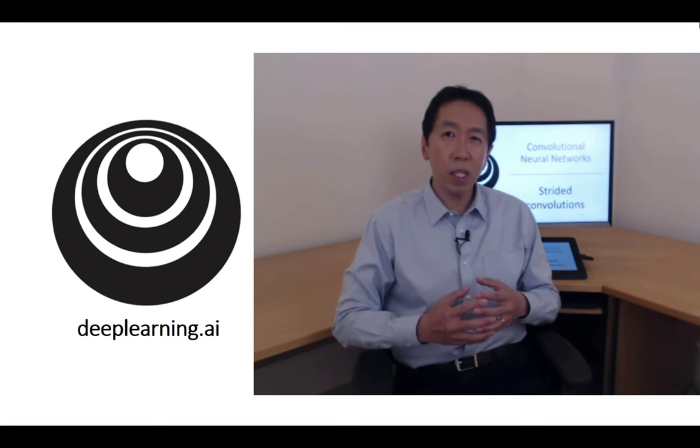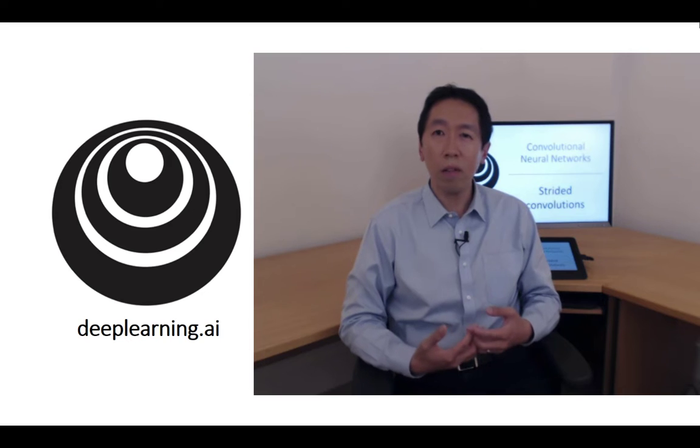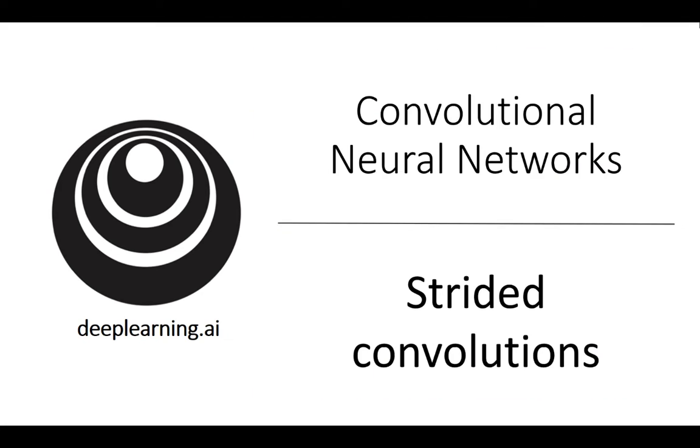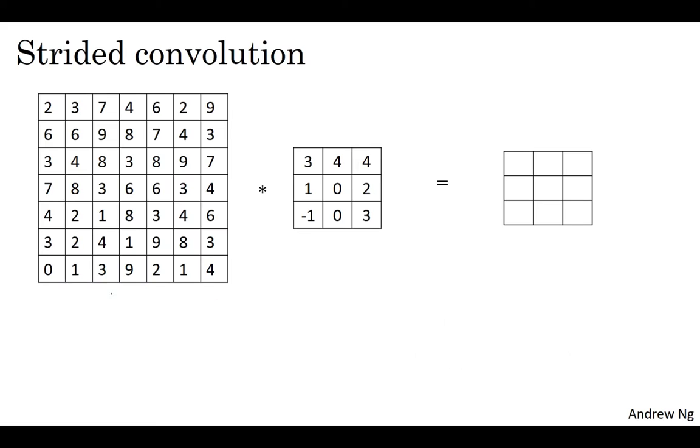Strided convolutions is another piece of the basic building block of convolutions as used in convolutional neural networks. Let me show you an example. Let's say you want to convolve this seven by seven image with this three by three filter, except that instead of doing it in the usual way, we're going to do it with a stride of two.